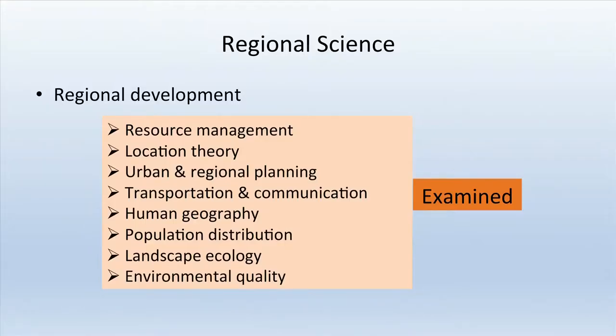In regional science, topics studied include resource management, location theory, urban and regional planning, transportation and communication, human geography, population distribution, landscape ecology, and environmental quality. All techniques — cartography, quantitative, qualitative, and regional science — are used interchangeably depending on the need, for analysis, planning, and program formation.